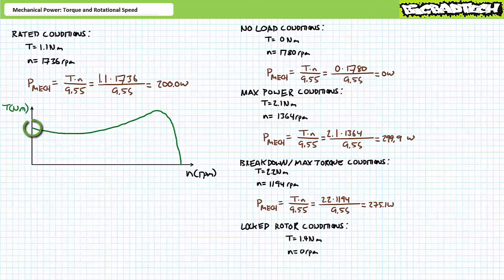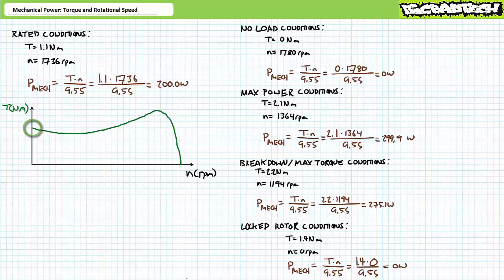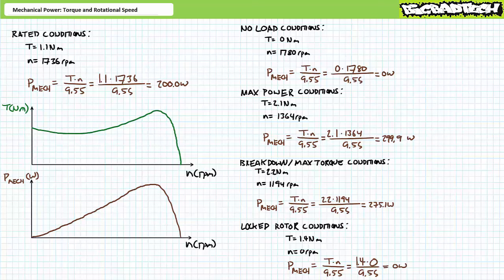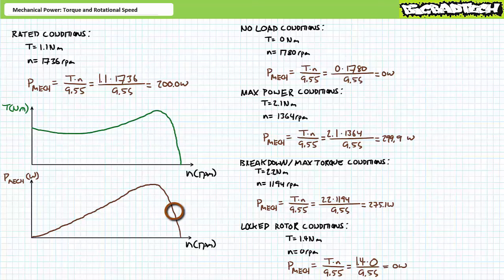If we plot mechanical power across the entire rotational speed range, we get a rightward-leaning peak. At opposite extremes — locked rotor and no-load — the motor exerts no power. In between, the motor experiences peak power, with the rated power condition on the right face of the slope. Motors are customarily operated at or near the rated condition, where the motor turns at rated speed, exerts rated torque, and produces rated power. Anything to the right of rated condition is under-loaded; to the left is an overload condition not meant to be sustained.